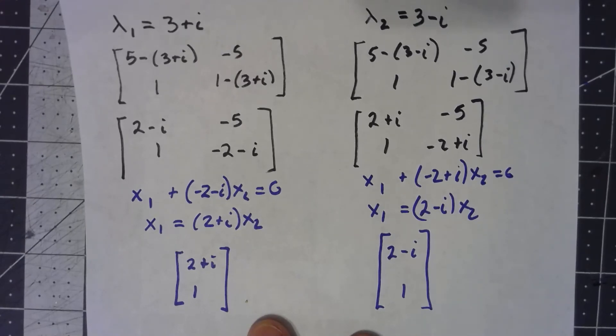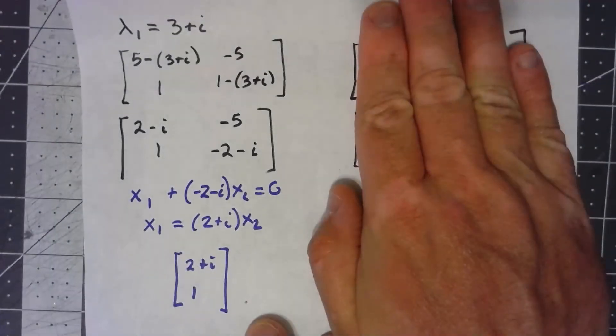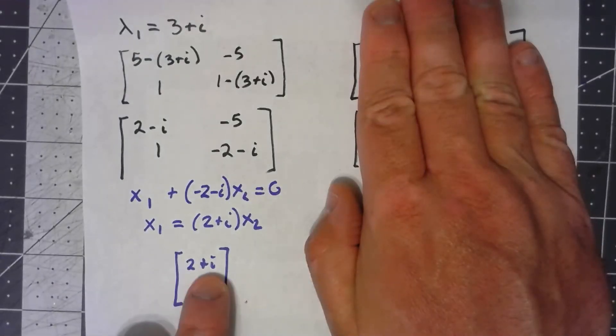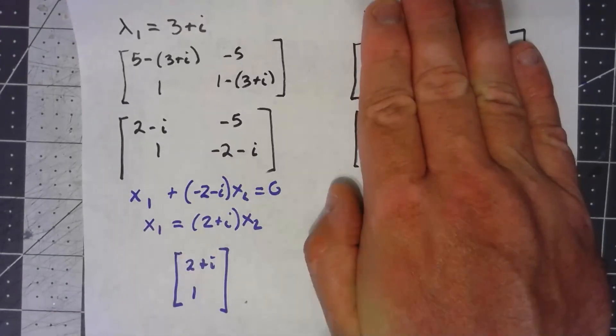Now that we know this, I don't need to go through this second thing. Once I get here, I know that just negating the i part gives me the eigenvector for the second eigenvalue.